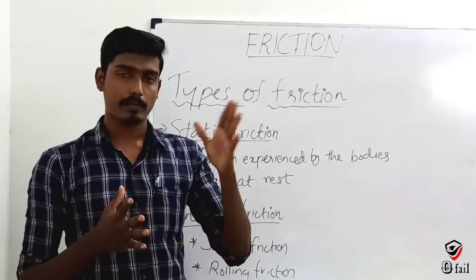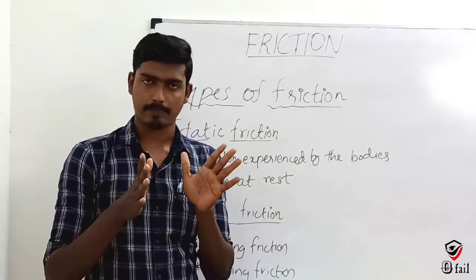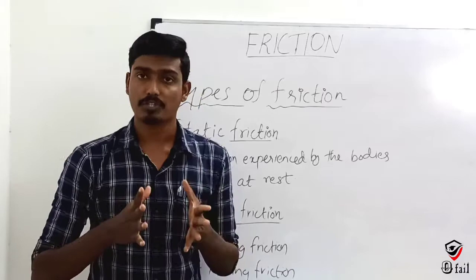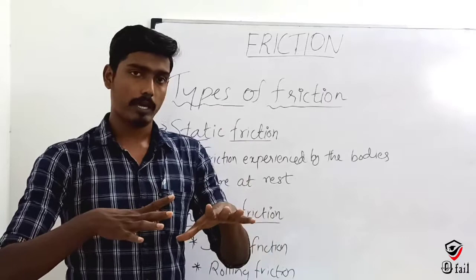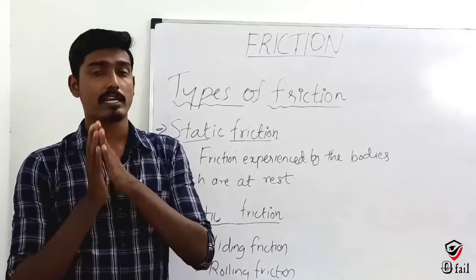So the types of friction — there are two major types: static friction and kinetic friction. Static means rest, okay? When the body is at rest, the friction acting on it is called static friction. When one body is resting on another, the friction between them is static friction.